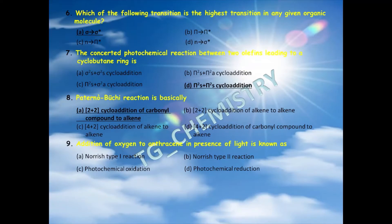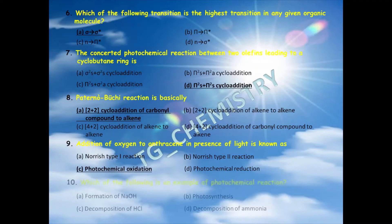Eighth question: the addition of oxygen to anthracene in the presence of light is known as which type of reaction? Is it a Norrish type 1 reaction, Norrish type 2 reaction, photochemical oxidation, or photochemical reduction? The right answer is photochemical oxidation.